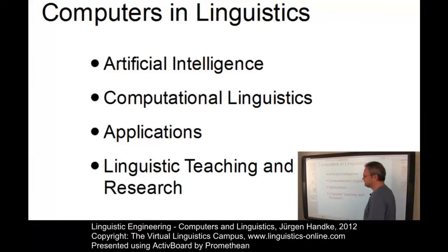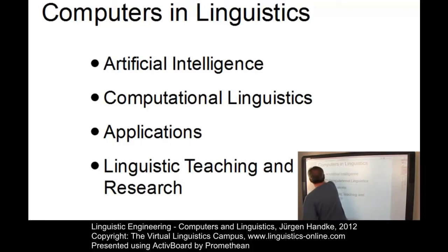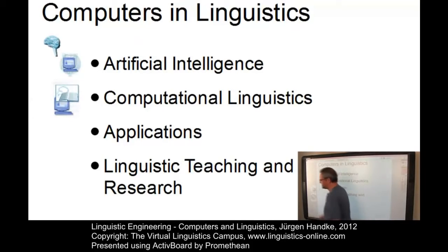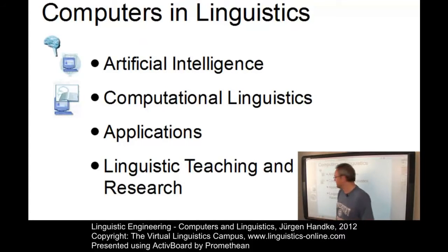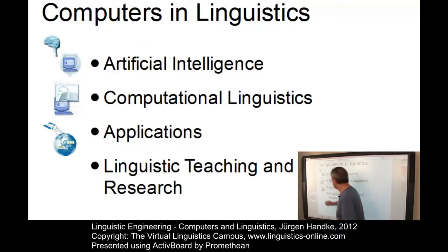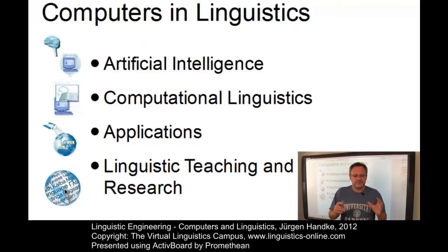There are numerous ways in which computers can be used in linguistics and various scientific disciplines involved in the development of language products. In artificial intelligence, linguistic applications only play a subordinate role. Computational linguistics, in a strict sense, subsumes all linguistic applications that involve human language processing strategies. Furthermore, there are various language products that lack sophisticated problem-solving strategies but are useful for the linguist. And the computer has become enormously important in linguistic education and research.